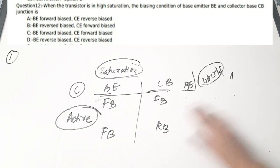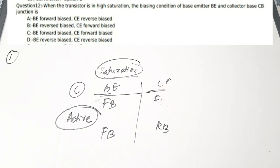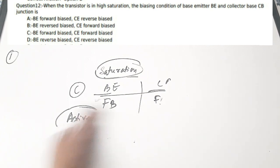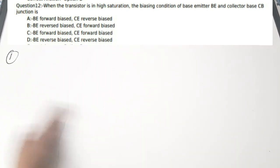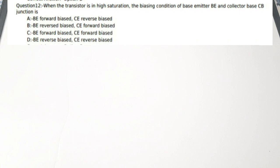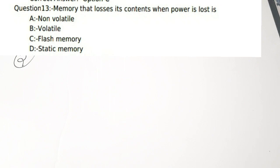You should know all four transistor regions and their biasing conditions. Second question: which memory loses its contents when power is lost? Options: A) non-volatile, B) volatile, C) flash, D) static.